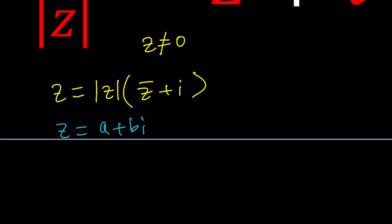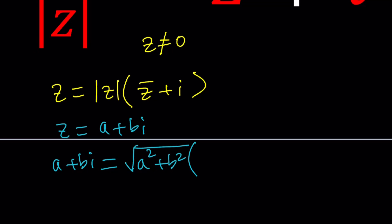Now let's plug it in. We're going to get A plus B I equals the absolute value — by definition, the square root of A squared plus B squared — times Z bar, which is A minus B I. Now let's combine the imaginary parts and write it as 1 minus B multiplied by I, because we get I minus B I, which is the same as this.